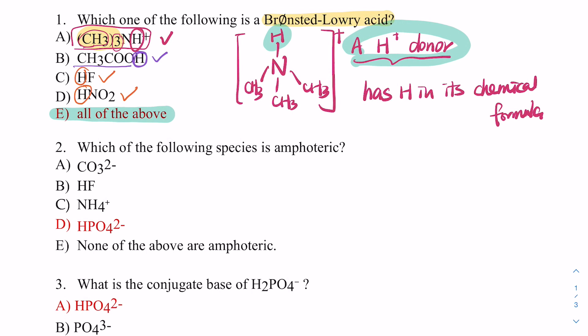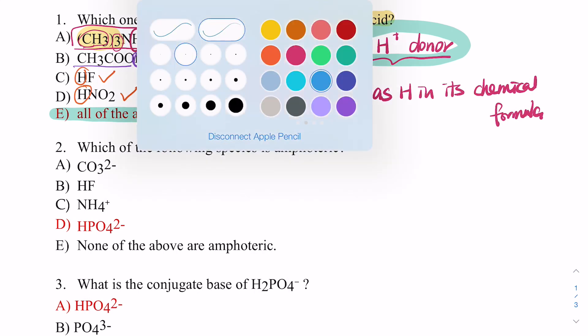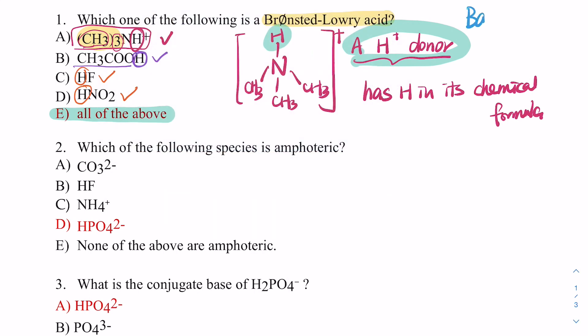On the other hand, for a Brønsted-Lowry base, the definition is proton acceptor. To tell if a chemical formula could be a proton acceptor, you look for a lone pair. That's what you're looking for when a question asks about a Brønsted-Lowry base.